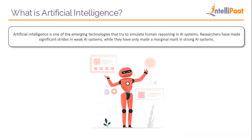The term artificial intelligence was coined by John McCarthy. Back in 1950, he said that every aspect of learning or any other feature of intelligence can in principle be so precisely described that a machine can simulate it. An attempt will be made to find how to make machines use language, form abstractions and concepts, solve kinds of problems reserved for humans, and improve themselves.